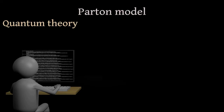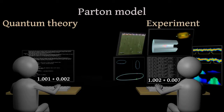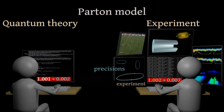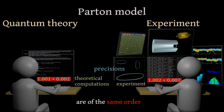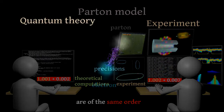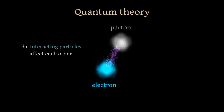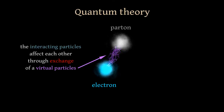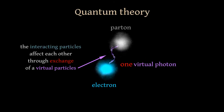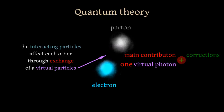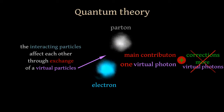However, quantum field theory gives us the possibility to evaluate the result with high precision, which is compatible with the precision of the corresponding experiment — that is, the precision of the experiments and the precision of the theoretical computations are of the same order. According to quantum field theory, in the collision between the electron and the Parton, the particles affect each other through exchange of so-called virtual particles, which for this process is a light quantum or a virtual photon. The exchange of one virtual photon gives the main contribution to the result of the interaction. To improve the obtained result we should take into account more virtual particles, but in many cases this is not necessary.